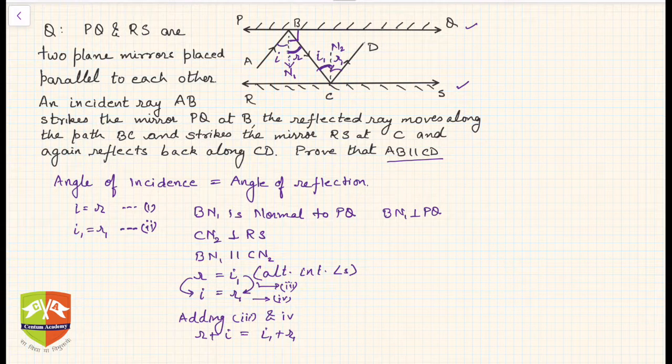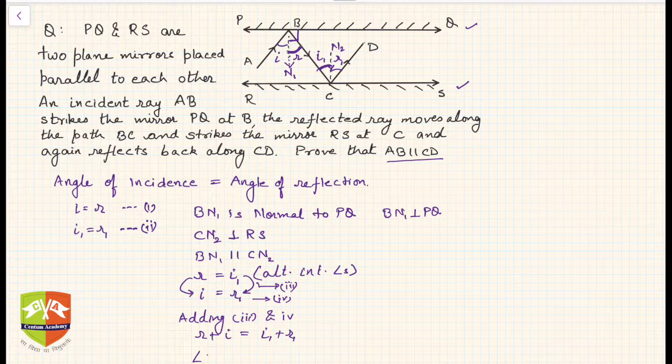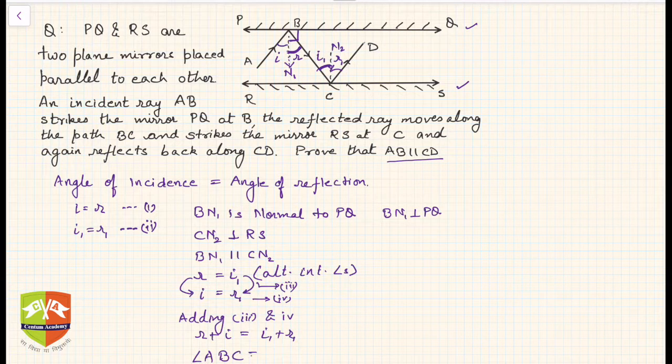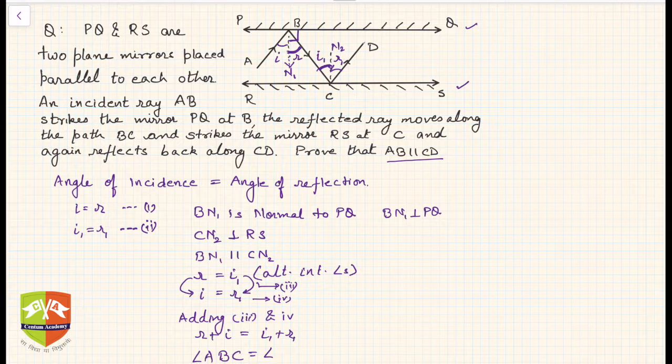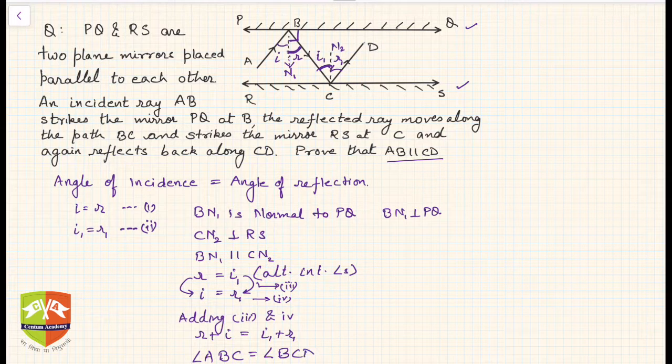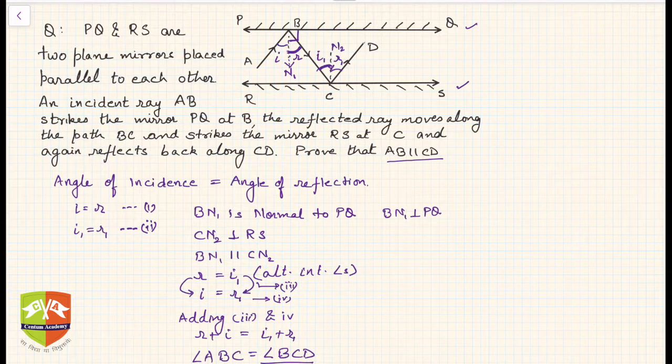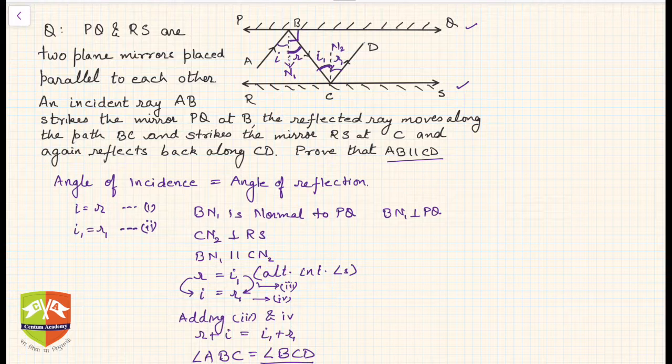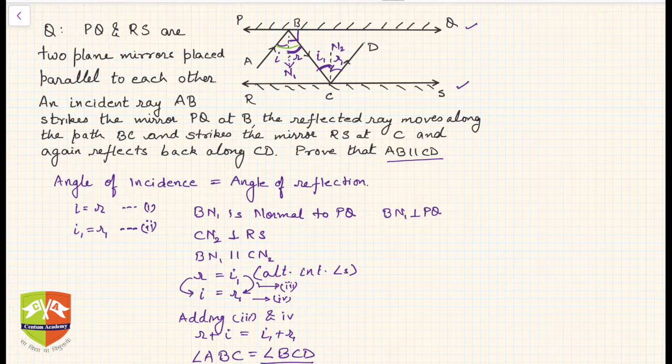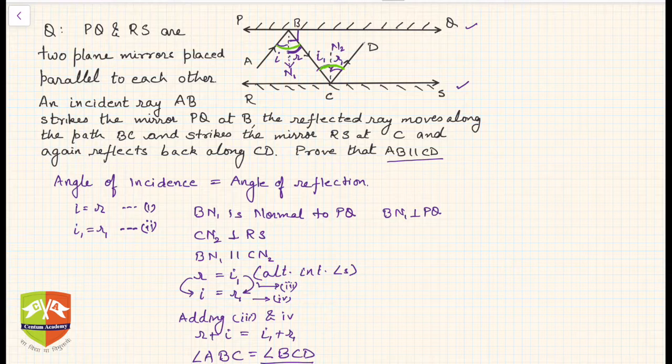If you see here, i plus r is nothing but... can I write this as angle ABC equals angle BCD? i1 plus r1 is BCD, so angle ABC equals BCD. So this angle is equal to this angle.